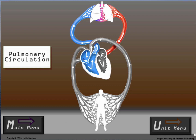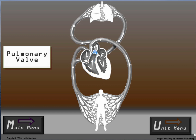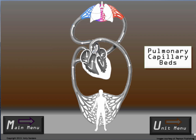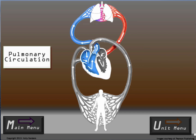Pulmonary circulation: The right atrium, then blood goes through the tricuspid valve into the right ventricle, out the pulmonary valve to the pulmonary arteries, pulmonary arterioles, and then the pulmonary capillary beds. It comes back through the pulmonary venules, veins, and into the left atrium.